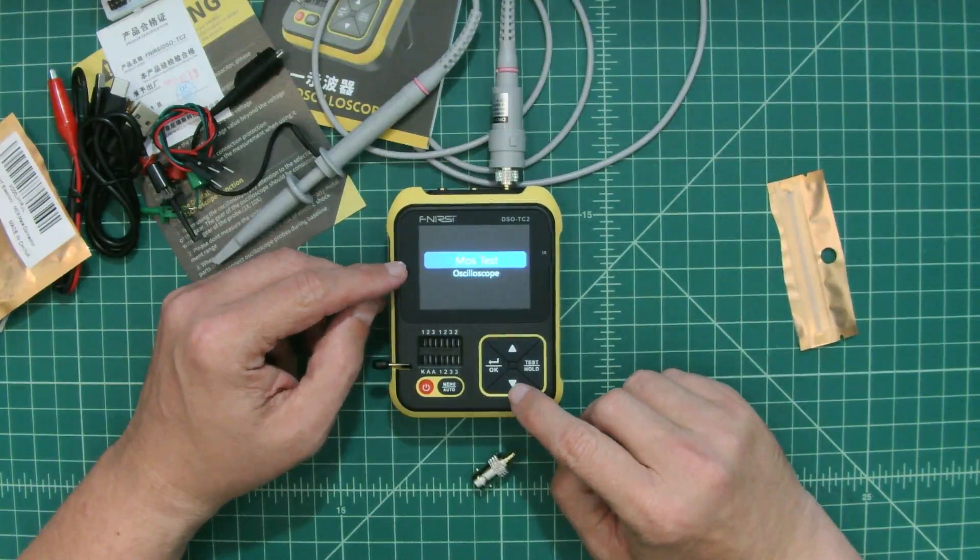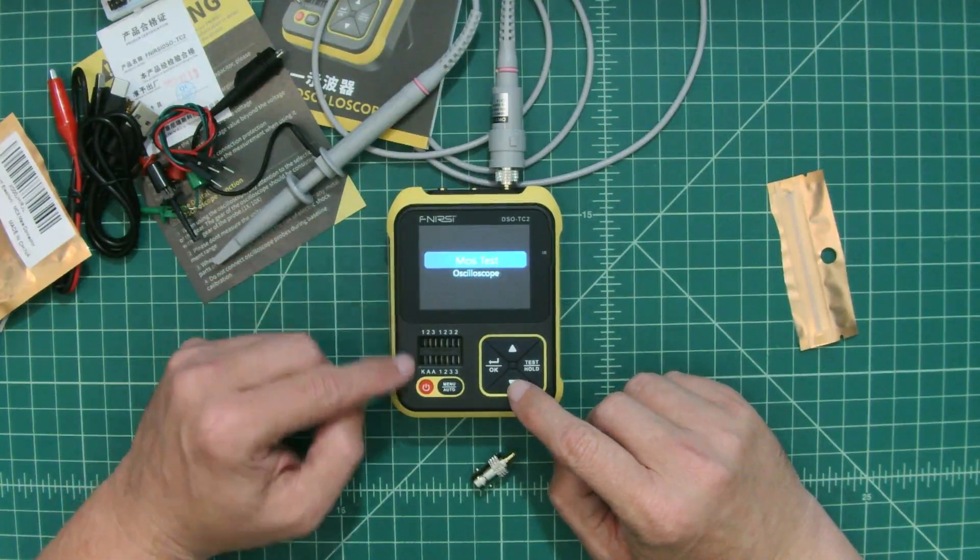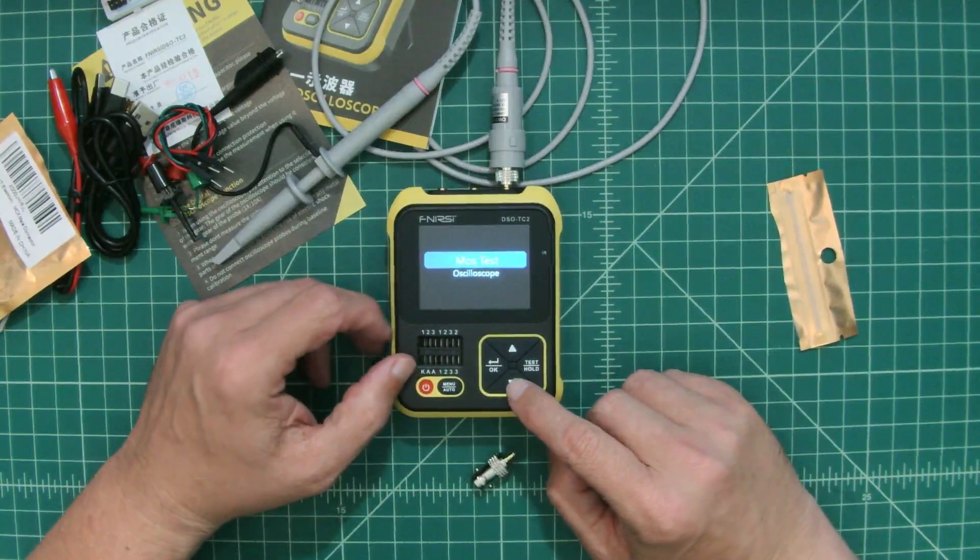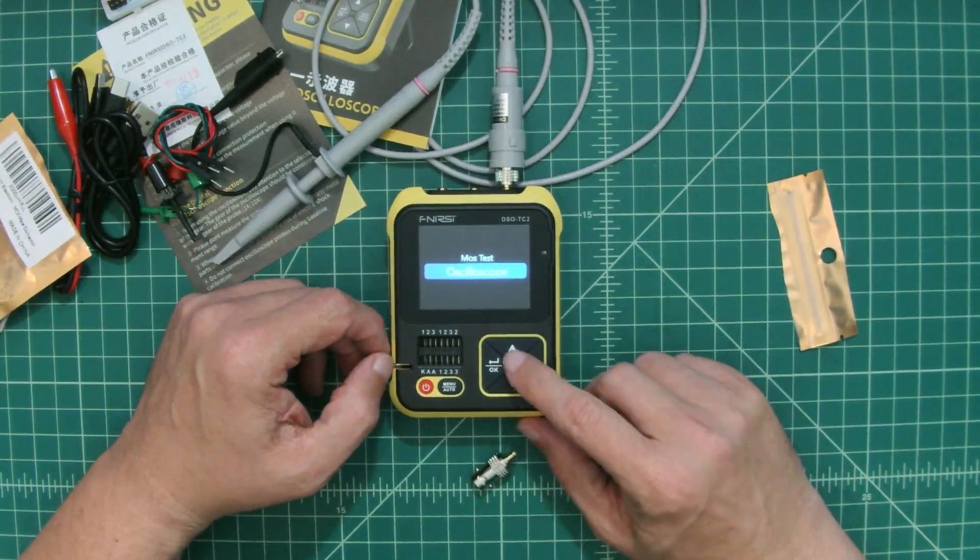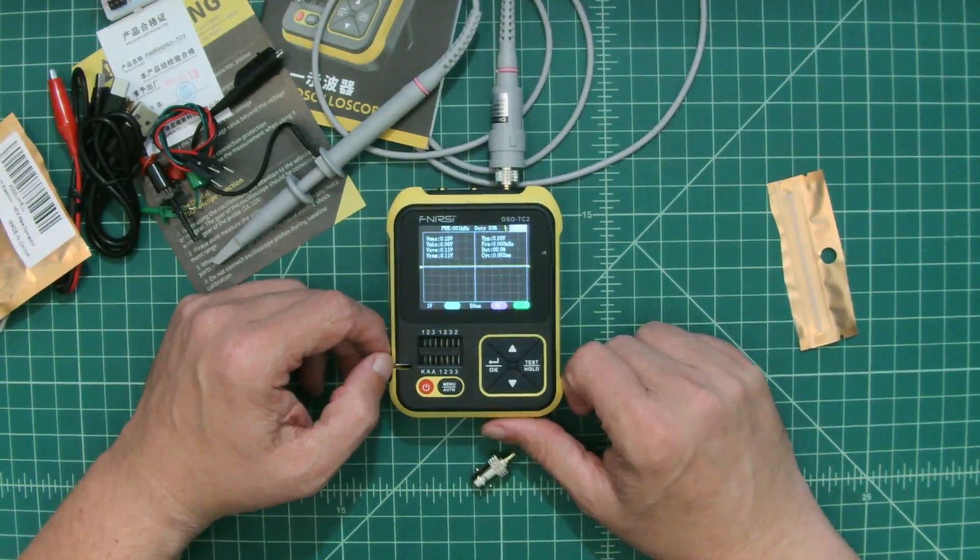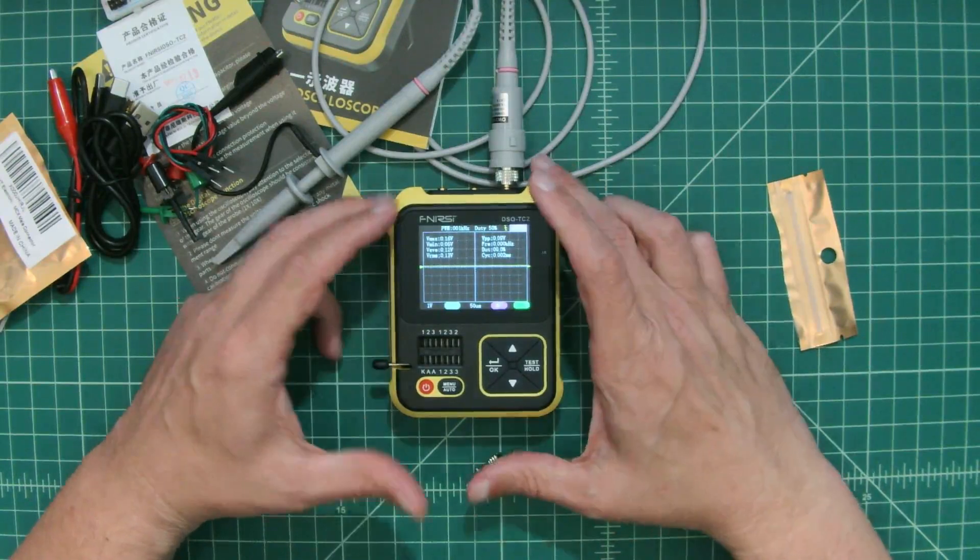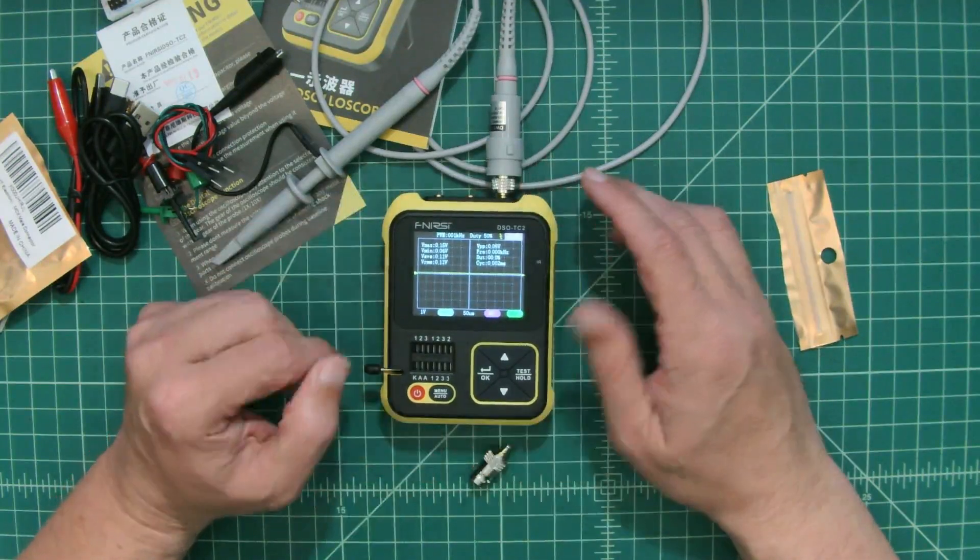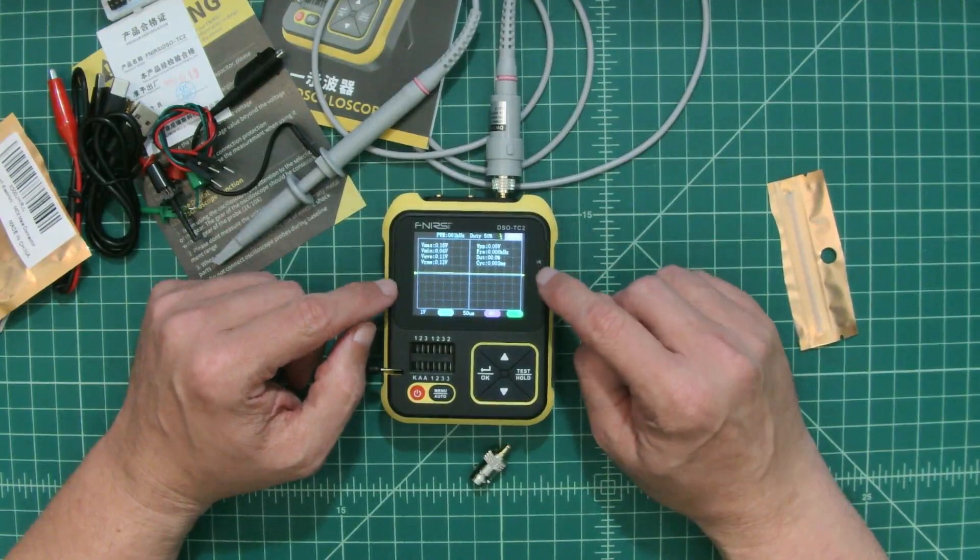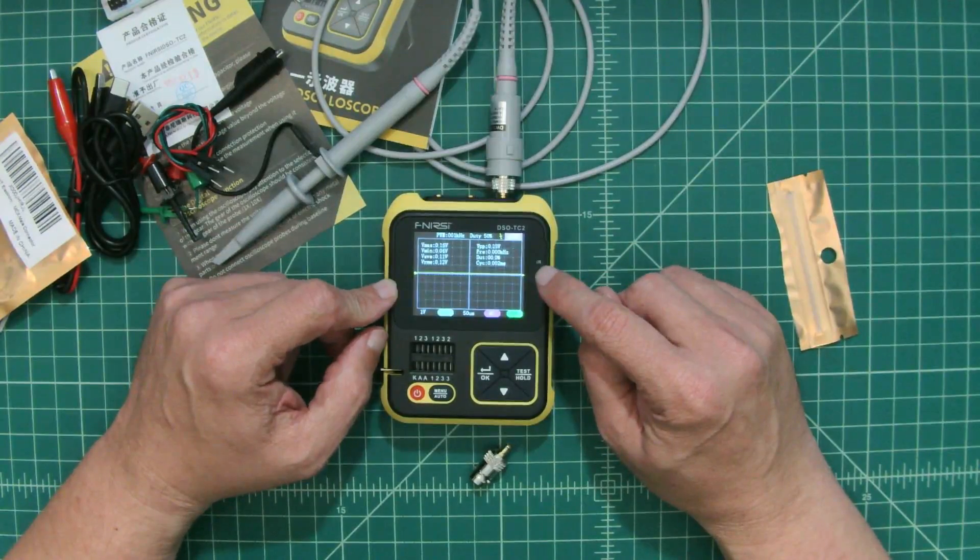It's asking me two different things. It's saying do I want to do a MOS test, which I think is for a MOSFET test, or the oscilloscope. You can pick either one. So let's just go with the oscilloscope. And then here's our oscilloscope window. I'm going to get a different camera set up so we can zoom in on this window and see what we can do.